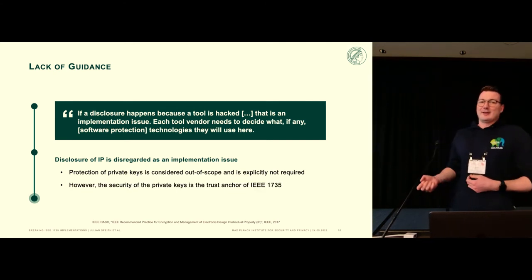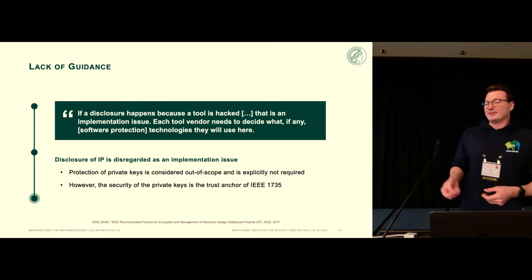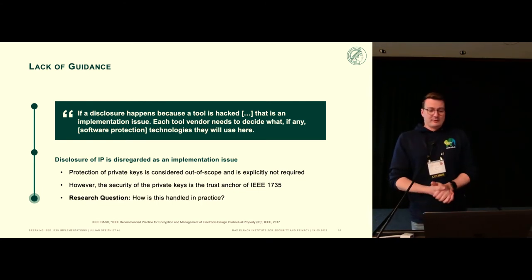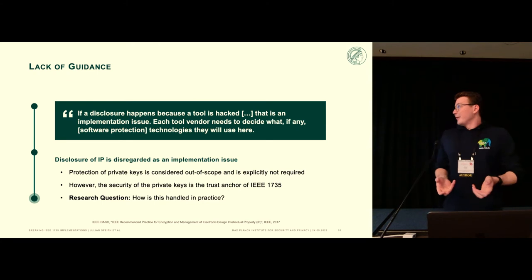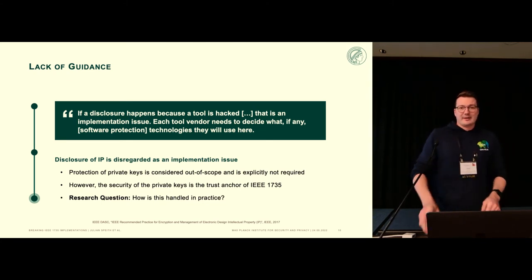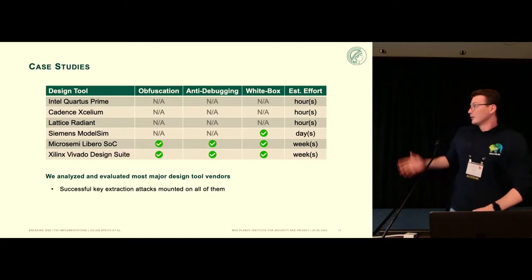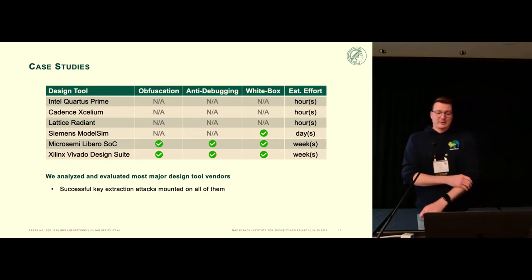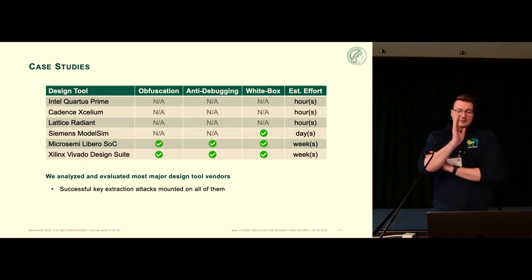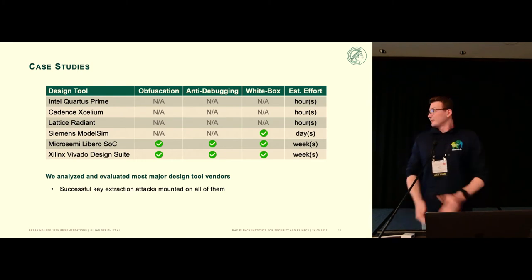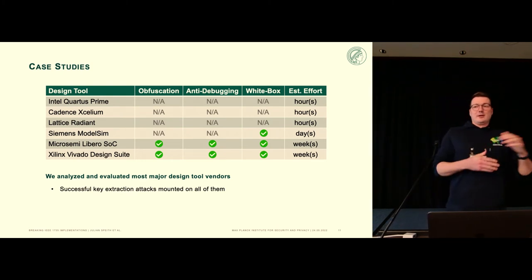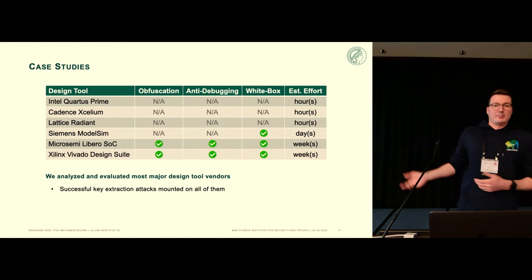Since the RSA private keys are really the trust anchor of the standard, our research question was: how is this actually done in practice? This is why we looked at six tools: Intel, Cadence, Lattice, Siemens, MicroSemi, and Xilinx — a wide range of larger and smaller companies.